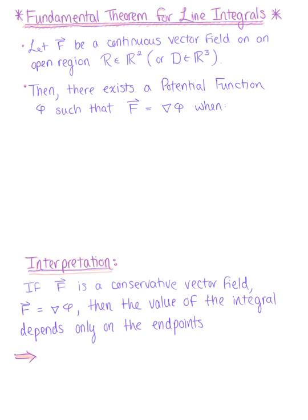So to begin, we want to let F be a continuous vector field on some open region R in R2, or in D in R3, or in Rn, then there exists a potential function phi such that the vector field is equal to the gradient of phi.